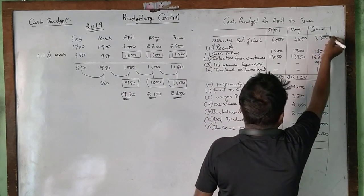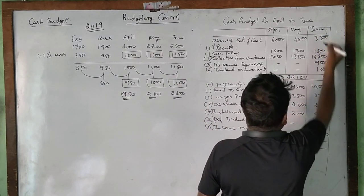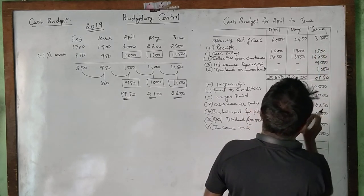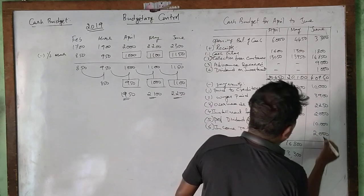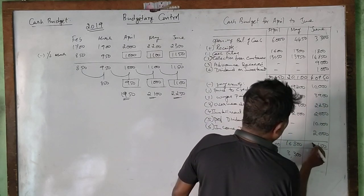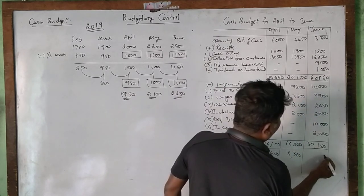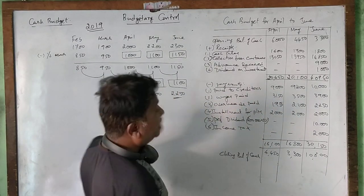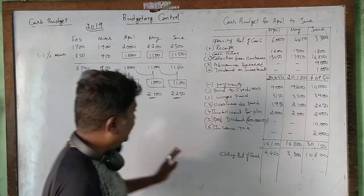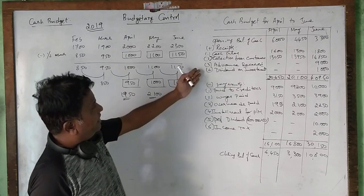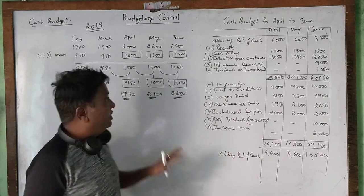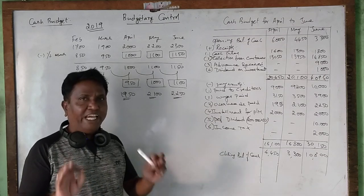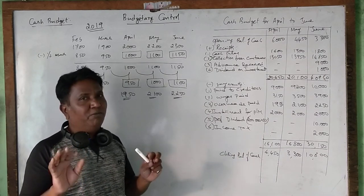The closing balance for one month becomes the opening balance for the next month — for June. After all adjustments and payments, the closing cash balance comes to approximately 10,000 to 10,850 rupees. This completes the cash budget problem with all ten adjustments accounted for correctly.